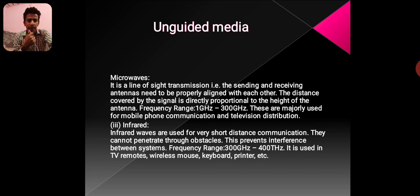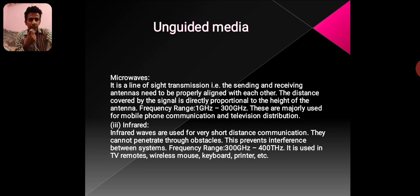Microwaves. Microwaves use line-of-sight transmission, meaning the sending and receiving antennas need to be properly aligned with each other. The distance covered by the signal is directly proportional to the height of the antenna. Frequency range: 1 GHz to 300 GHz. Microwaves are majorly used for mobile phone communication and television distribution.